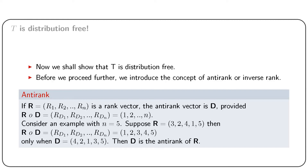If d is the anti-rank, then r of d must be 1, 2, 3, 4, 5. We see that r4 = 1, thus d1 = 4. Again, r2 = 2 indicates d2 must be 2, and so on. Thus, d is a permutation of the rank vector such that r of d is the set of positive integers ordered naturally.